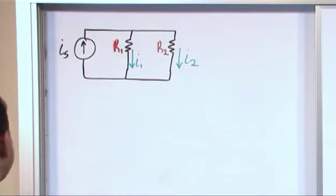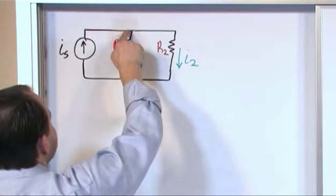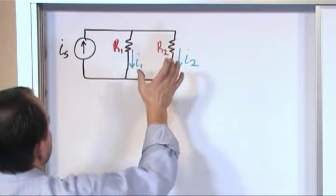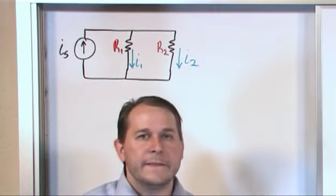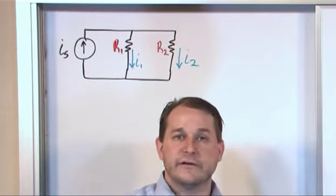So you know from experience that the current is going to flow up, it's going to hit this node, part of it's going to go here, part of it's going to go here. This is the current division, the junction points, the nodes—that's where the current's splitting.